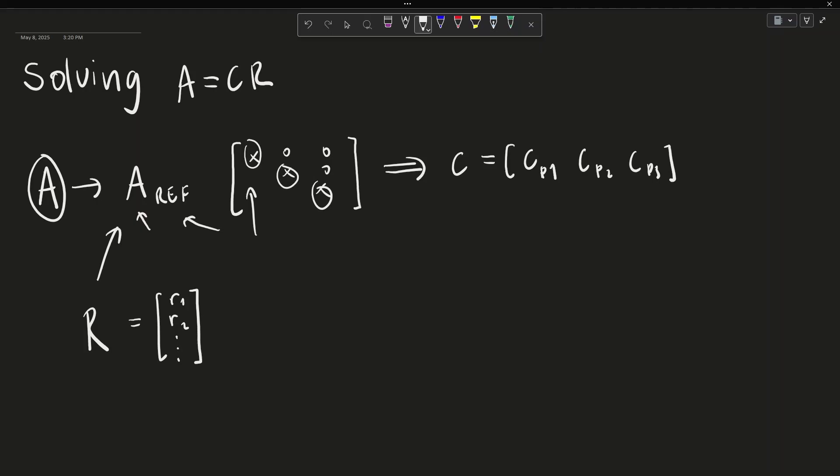Let's work through an example to illustrate how to find C and R in the system A equals CR.